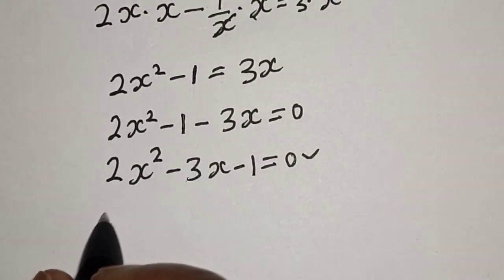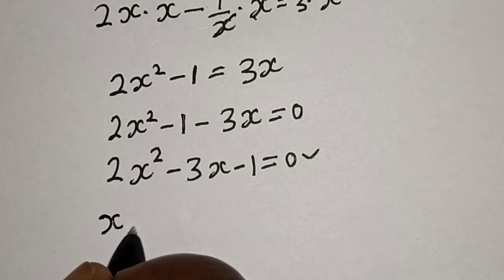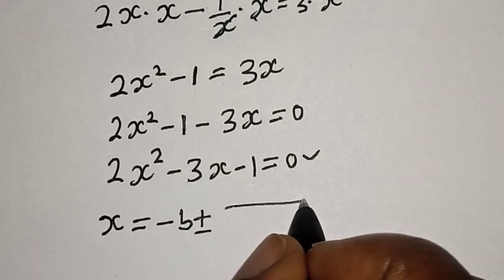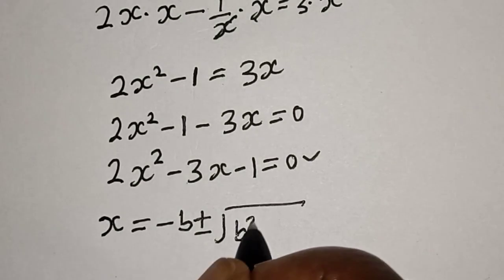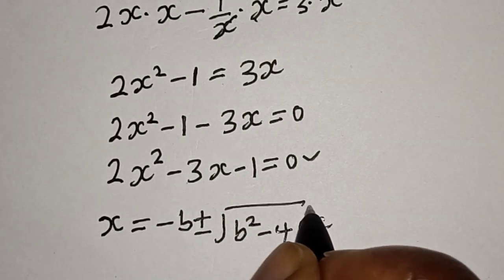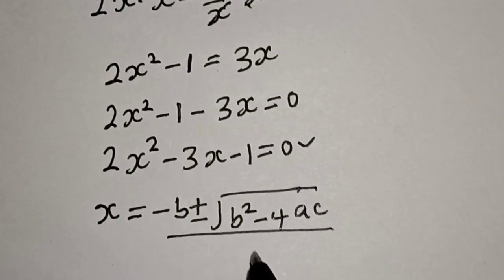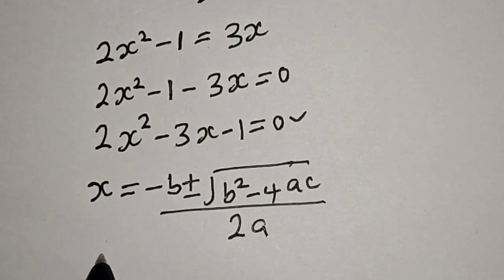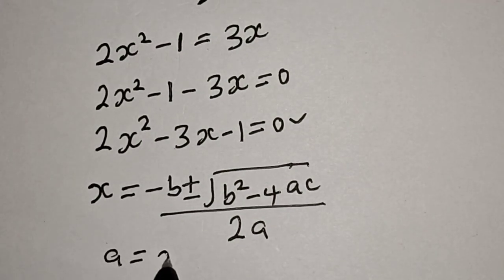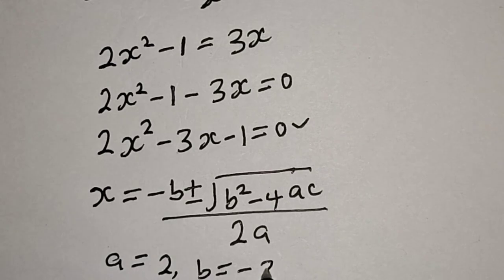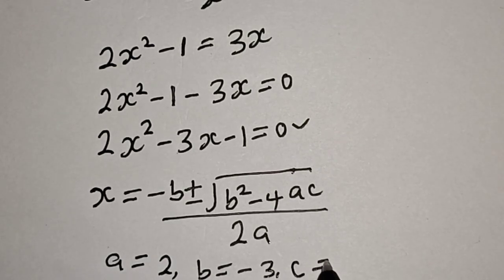The quadratic general formula is given as s equals negative b plus or minus square root of b squared minus 4ac, over 2a. From this equation, a is equal to 2, b is equal to minus 3, and c is equal to minus 1.